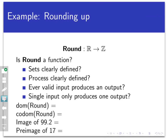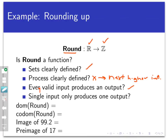Let's go back to some things from the first video. The rounding function — we'll call it 'round' — takes a real number and rounds it up to the next higher integer. Is this really a function? Are the sets clearly defined? Yes — there's the set of inputs and the set holding the outputs. Is the process clearly defined? Yes. Does every valid input produce an output? Yes, every real number can be rounded. Does a single input produce only one output? Yes — if I start with a real number and round it, it won't round to two different integers.